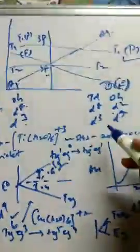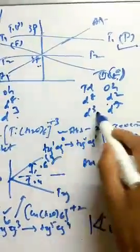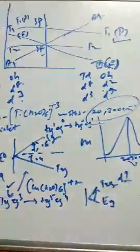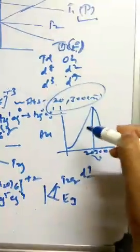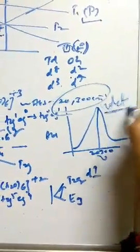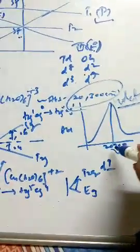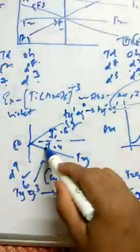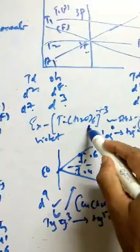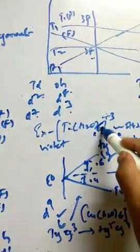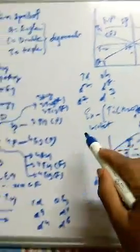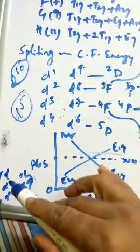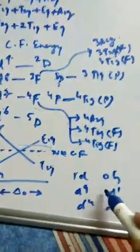One example: titanium hexaaqua [Ti(H₂O)₆]³⁺. Titanium(III) is a d1 system. It absorbs at 20,300 cm⁻¹ and this complex is violet in color. We have one absorption peak. The complex has 6 ligands so it is octahedral. Now locate d1 in the Orgel diagram — tetrahedral d1 is on one side, so octahedral d1 is on the opposite side.